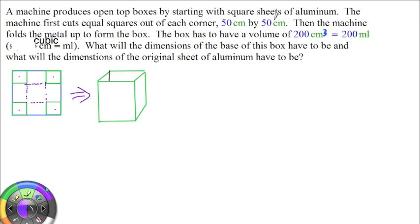In this case, 50 centimeters by 50 centimeters are these little squares. Then it folds the metal up, basically folds on the dotted line. What happens when you do that is you get this open top box with a solid base.